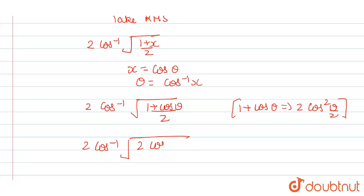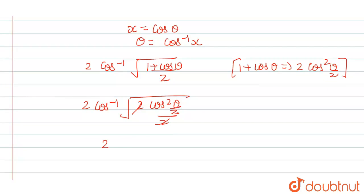So it will become 2 cos square theta by 2 divided by 2. So this will cancel each other out. So from here, we get 2 cos inverse.